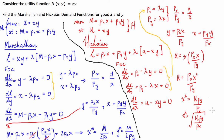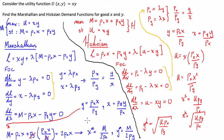If you substitute X into the utility constraint and solve for Y, you get the same result: Y in terms of the Hicksian demand equals the square root of U·PX / PY. So here we have our Hicksian, or compensated, demand functions for X and Y, and our Marshallian, or uncompensated, demand functions for X and Y.